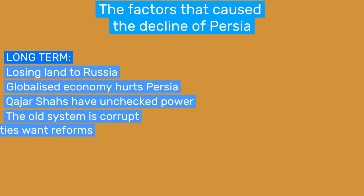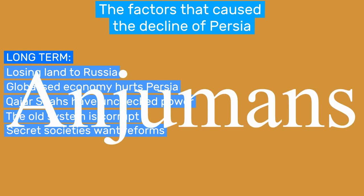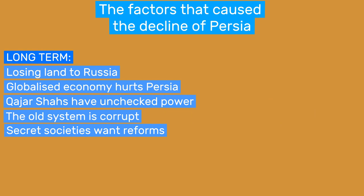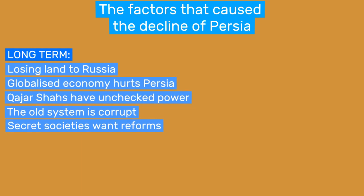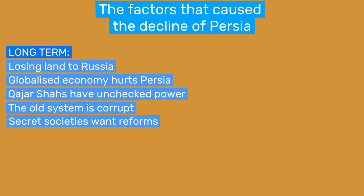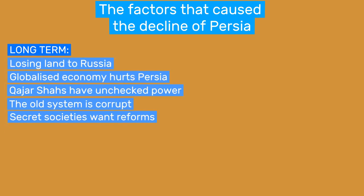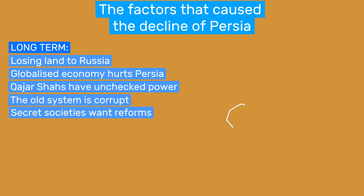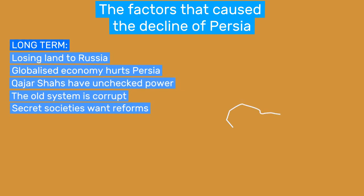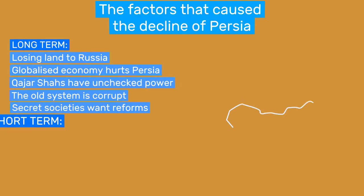Fourthly, globalization also led to the spread of Western ideas of representation, democracy, and the freedom of press. Social democratic and nationalistic secret societies, or Anjumans, were forming that postulated the formulation of a parliament, the Majlis. So far we have looked at long-term factors that contributed to the outbreak of the revolution. In a metaphorical sense, these were like dry wood ready to burst into flames at the touch of a spark. Now to look at such sparks — small-scale events that preceded the revolution.